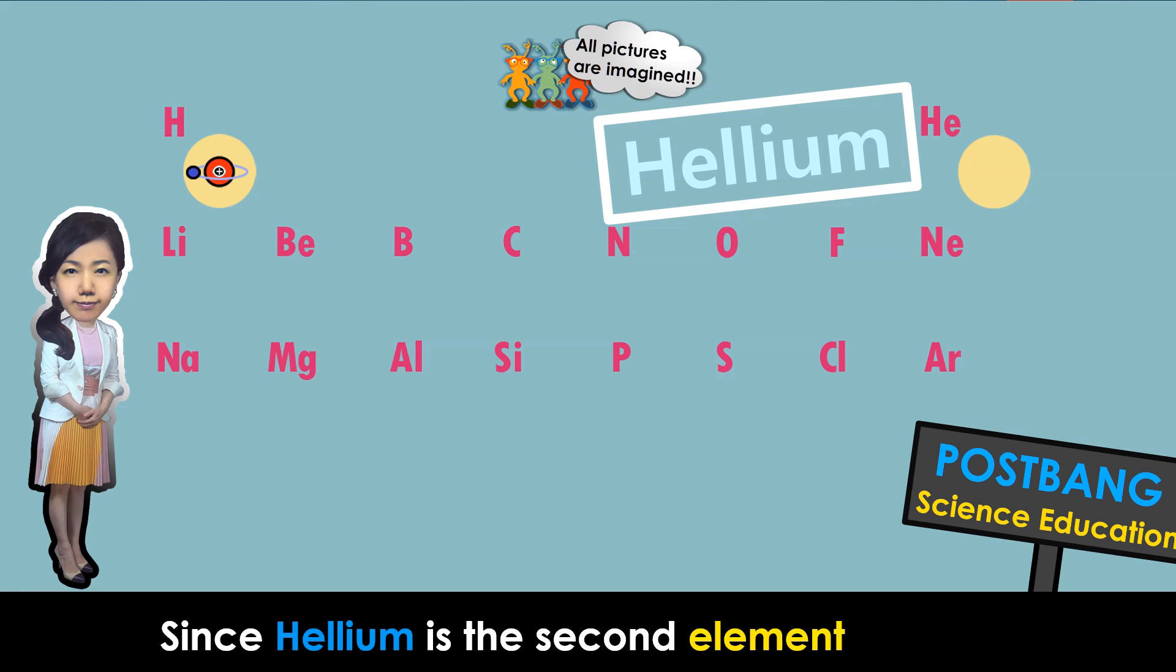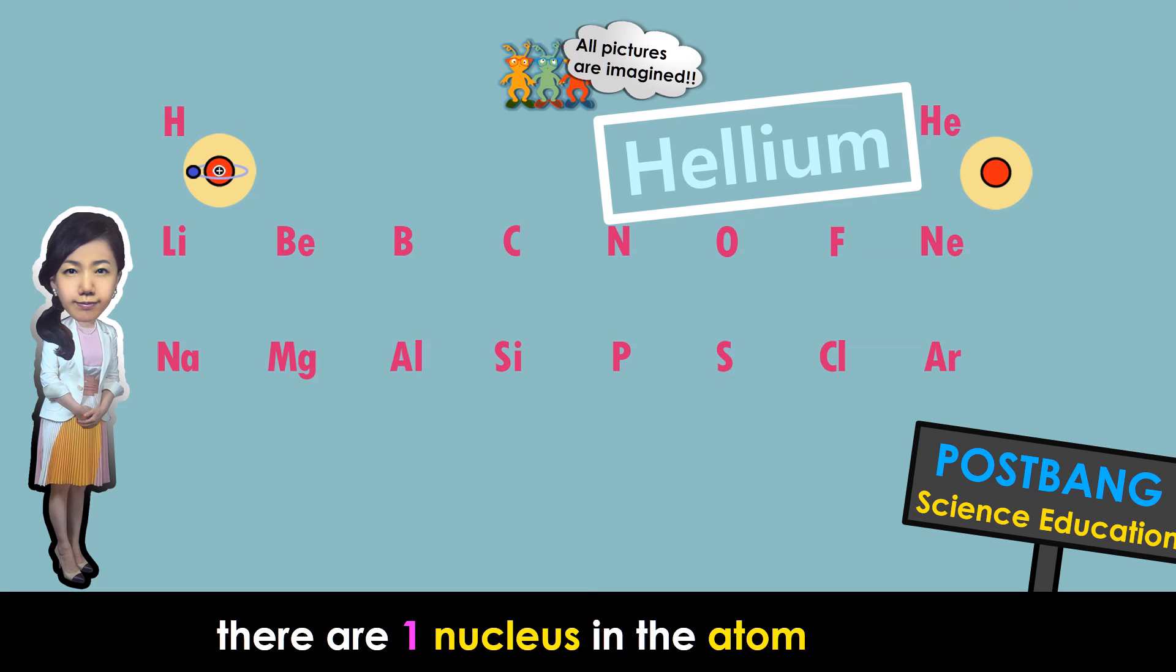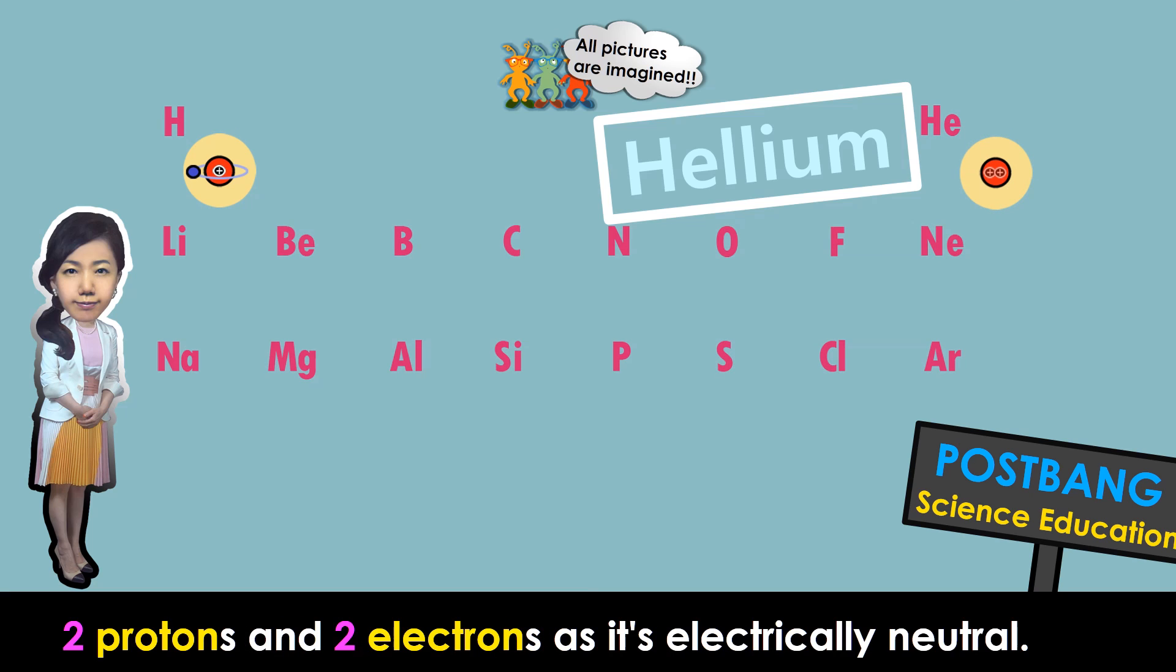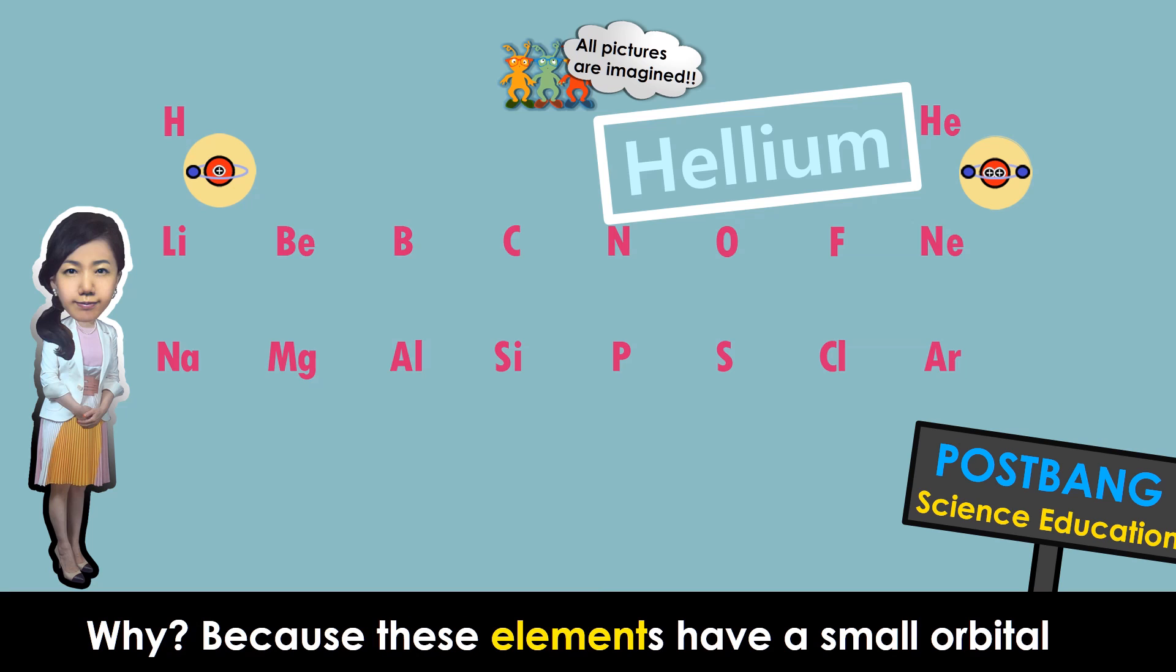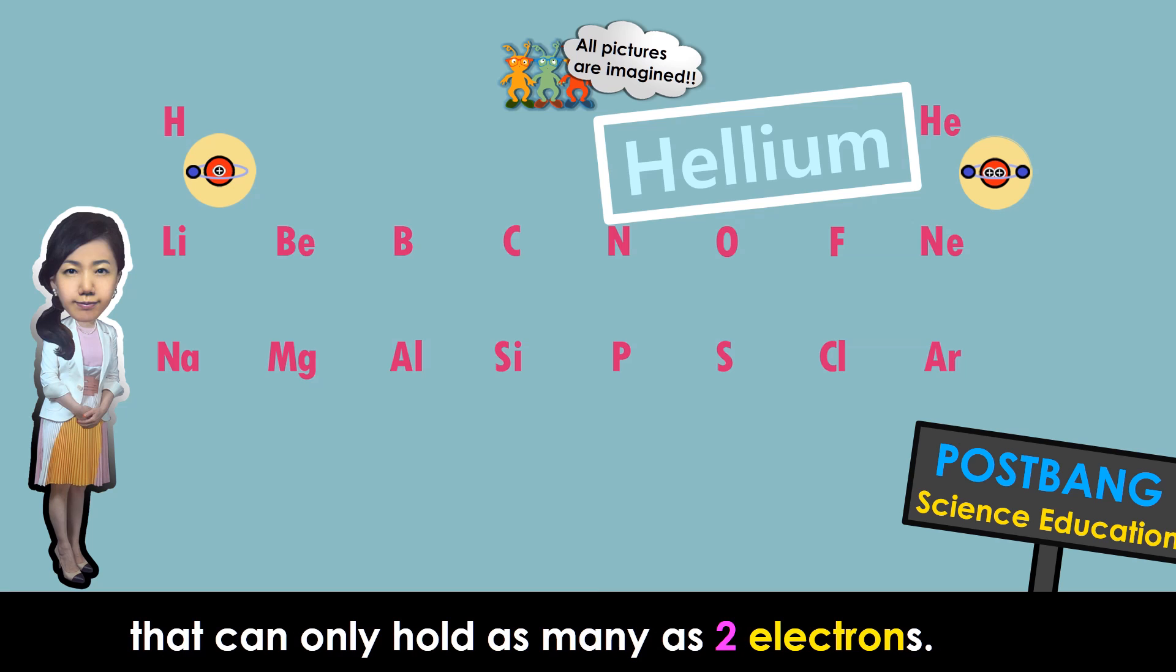It's helium at the top right. Since helium is the second element, there are one nucleus in the atom, two protons, and two electrons as it's electrically neutral. This is it for the first row. Why? Because these elements have a small orbital that can only hold as many as two electrons.